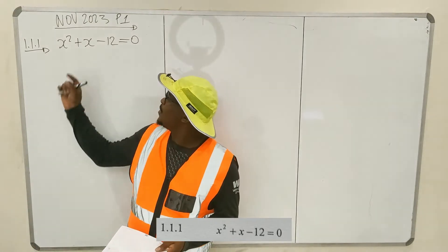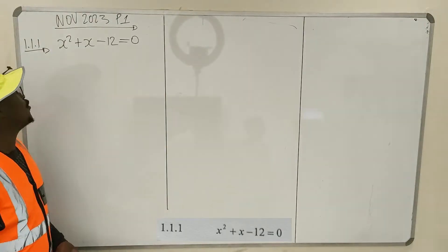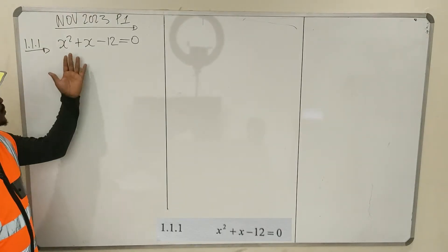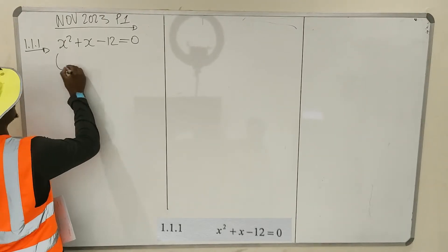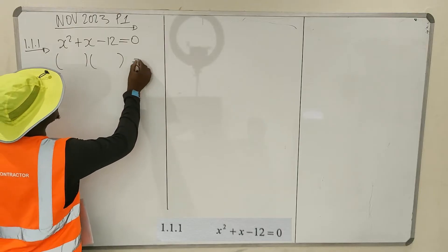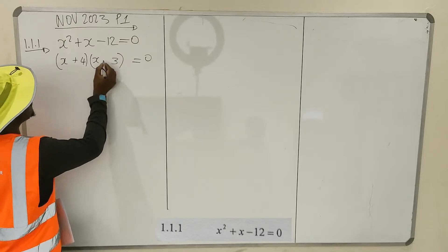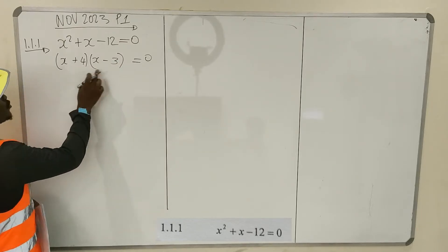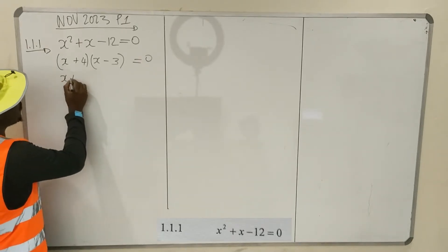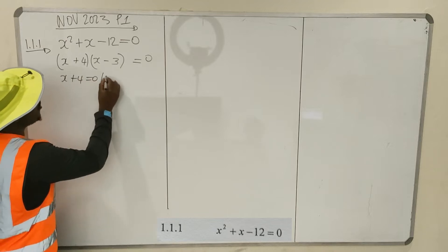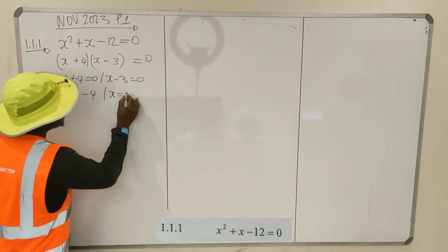Solve for x. We are given this equation — the first equation. When you are given an equation in this form, it's easy to deal with. You can put it in brackets using a quadratic formula or factorize. So let's factorize: bracket times bracket is equal to 0. We have (x+4)(x-3). So x plus 4 is 0 or x minus 3 is 0, giving x = -4 and x = 3.